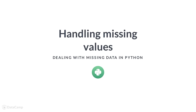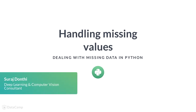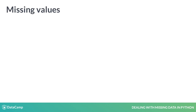In the previous lesson you were introduced to the two null value types that you encounter in Python. In this lesson you will assign null values to the missing values in the data set. Missing values in a data set aren't usually left unfilled — they are filled with dummy values like NA, hyphen, period, etc. In this lesson you will learn to detect such missing values as well as replace them with NaN.